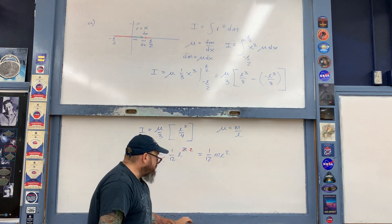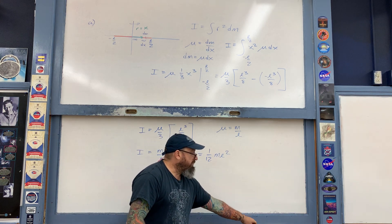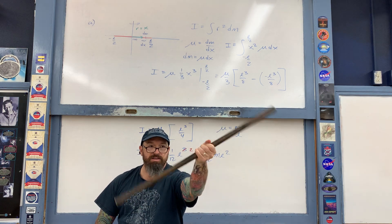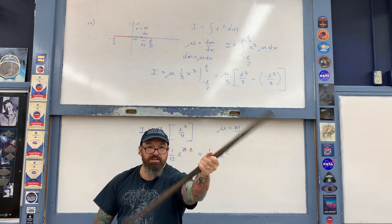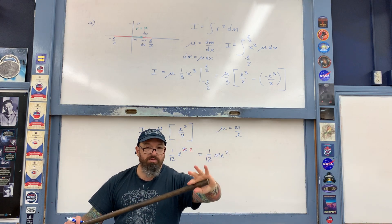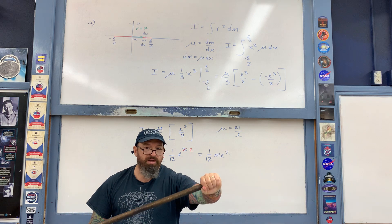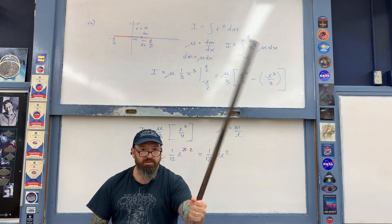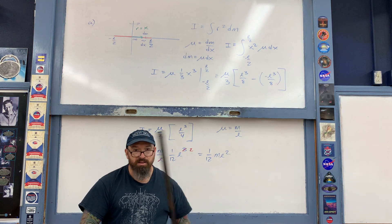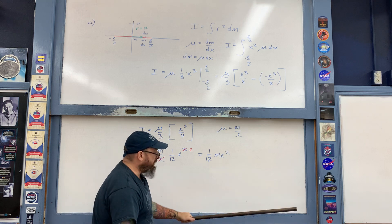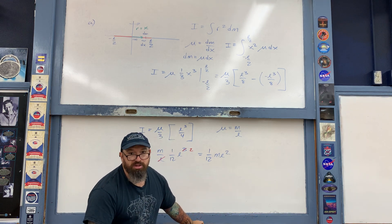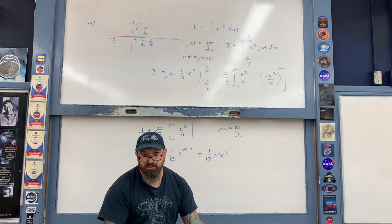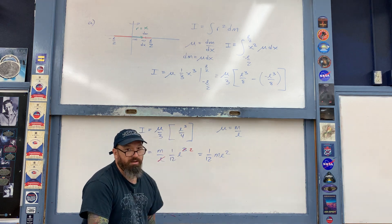This is the rotational inertia when you take the stick and rotate it about an axis passing through the center of mass. Now what we'll do is pivot it about an axis that is passing through one end — that's going to be part B of this example. The only thing that will change, however, are the limits of integration from what I did earlier.